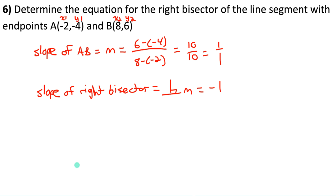Since the a value is negative, the parabola opens down. The domain is all real numbers — there are no restrictions. Since it opens down, the vertex is at the top, so the range is y ≤ 3. To graph, make a table of values with the vertex in the center at (−4, 3), then pick x-values on either side like −5, −6, −3, −2 and calculate the corresponding y-values.